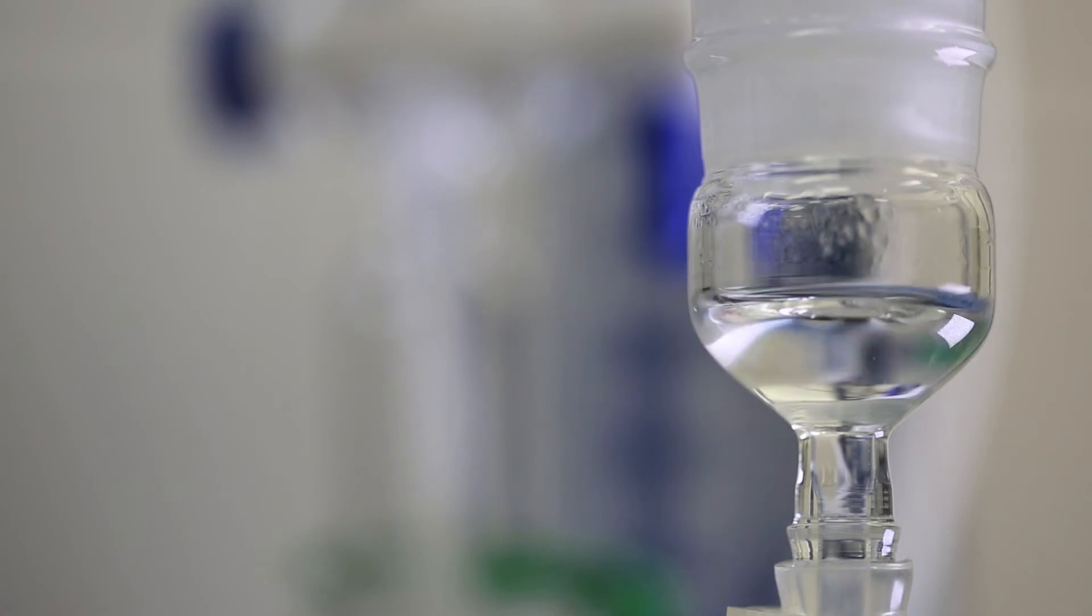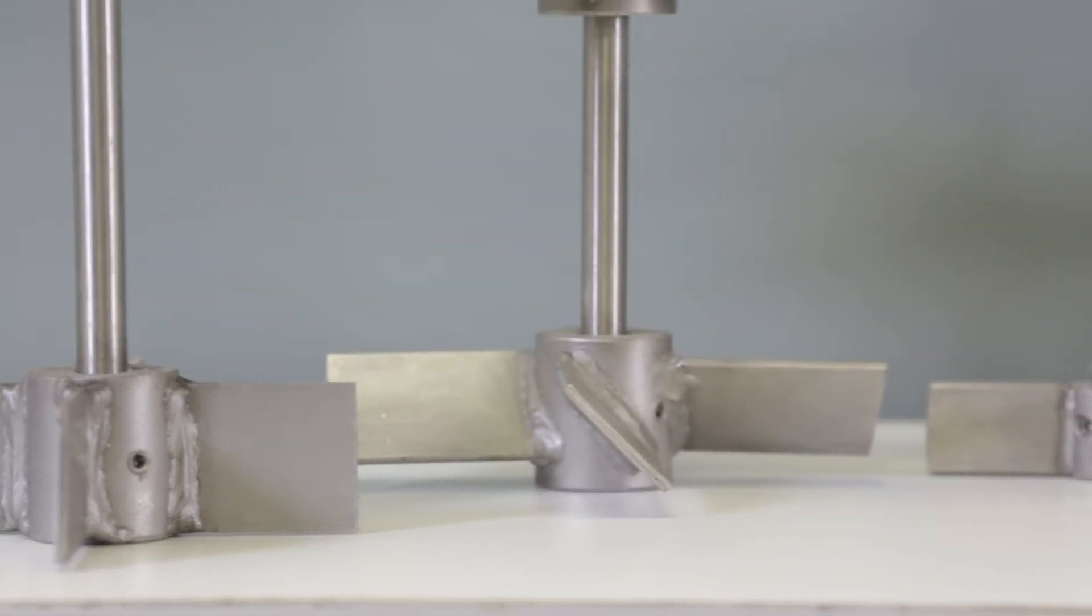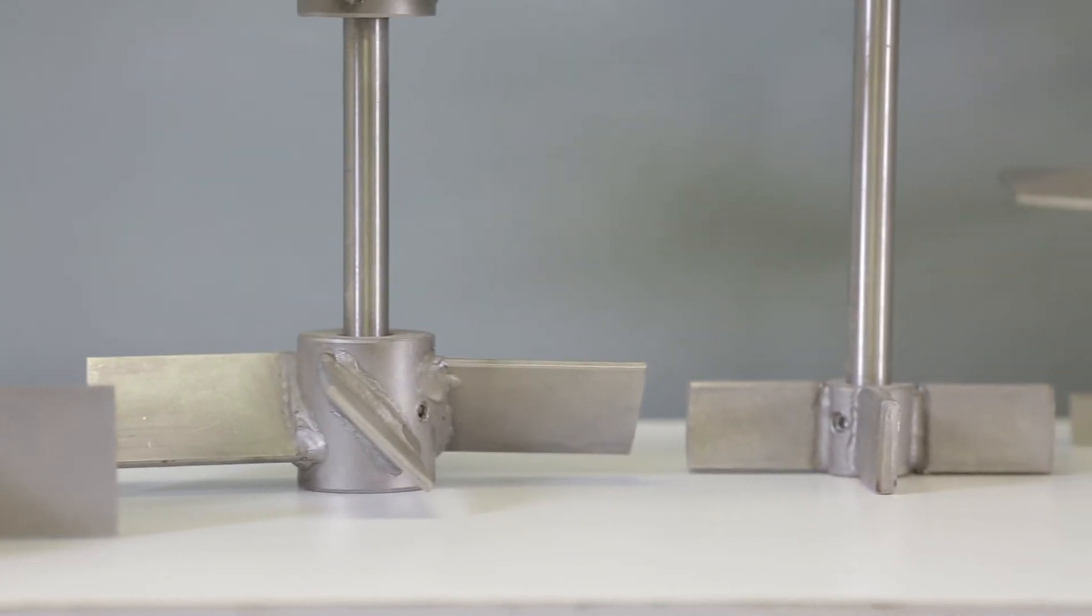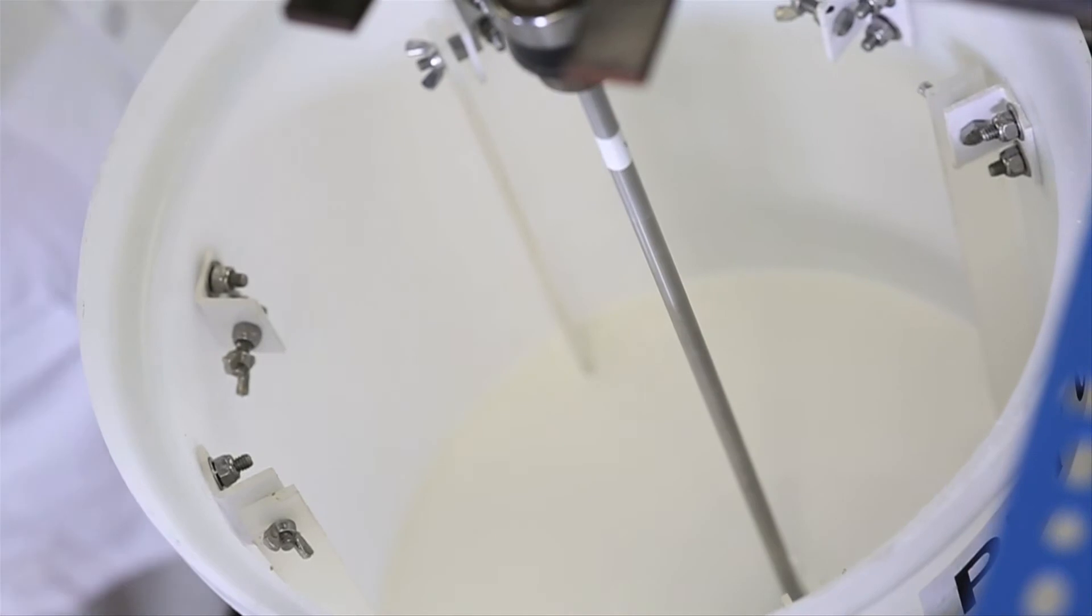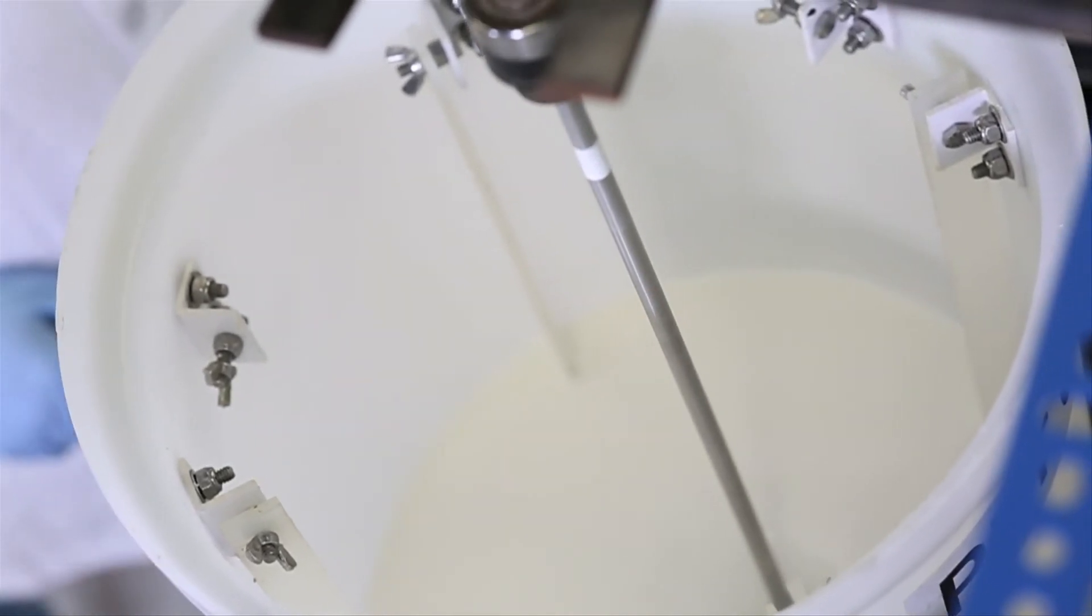Once we create a base polymer, we can custom formulate the adhesive to a wide variety of coating methods, running at varying speeds from 100 FPM to over 1000 FPM. We can easily develop the right product to coat on your equipment.